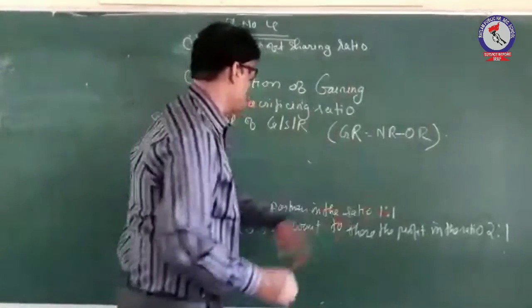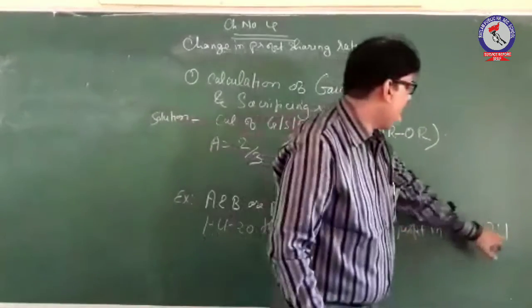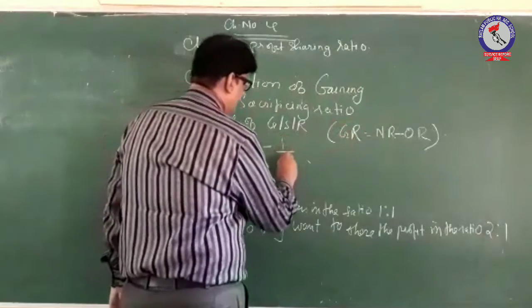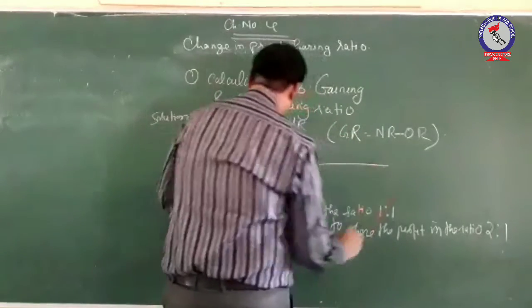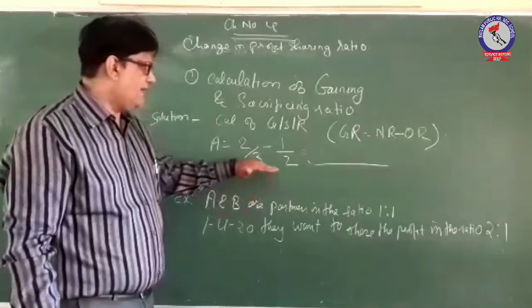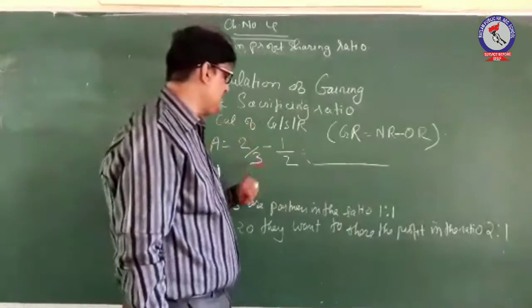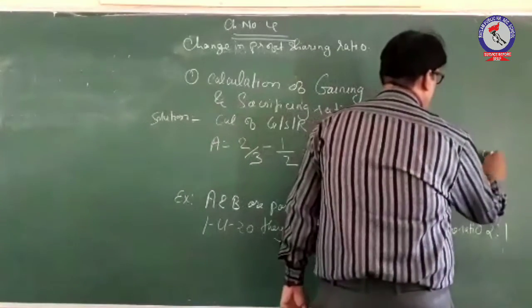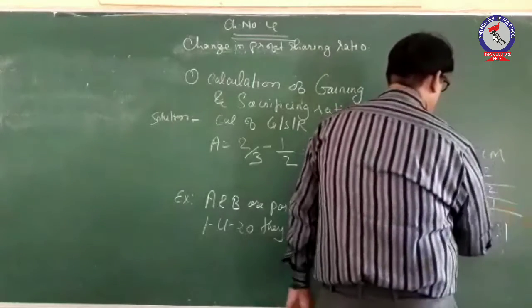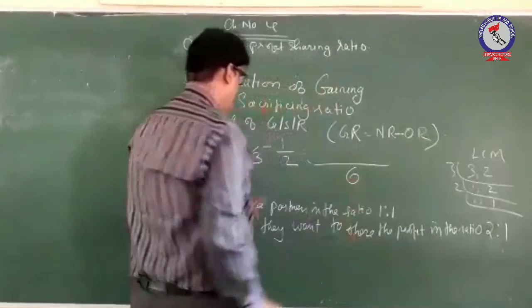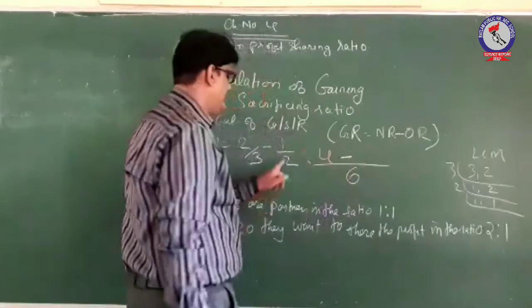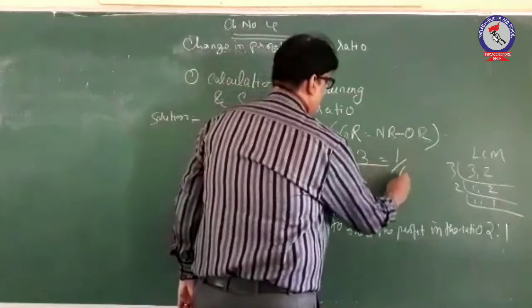For partner A, the new ratio is 2 out of a total of 2+1=3, so new ratio for A is 2/3. The old ratio was 1 out of 1+1=2, so old ratio for A is 1/2. Now, 2/3 minus 1/2 — since the denominators 3 and 2 are not common, we find the LCM. LCM of 3 and 2: 3 twos are 6, so LCM is 6. Therefore: (2×2)/(6) minus (1×3)/(6) = 4/6 minus 3/6 = 1/6.